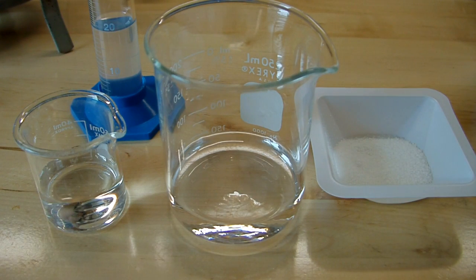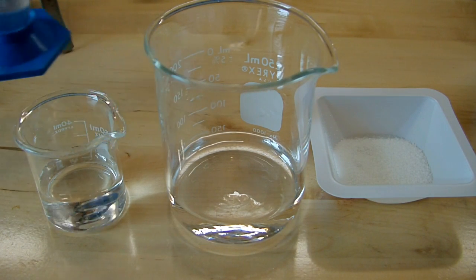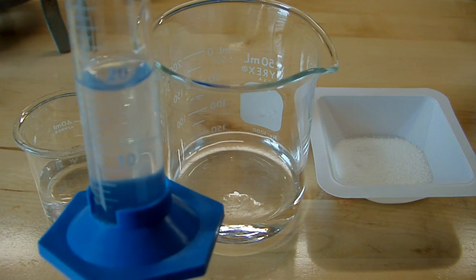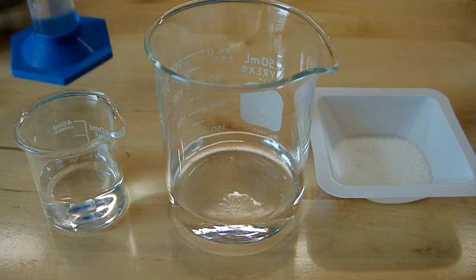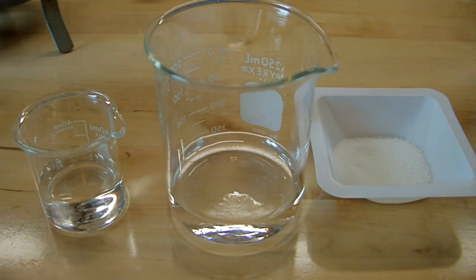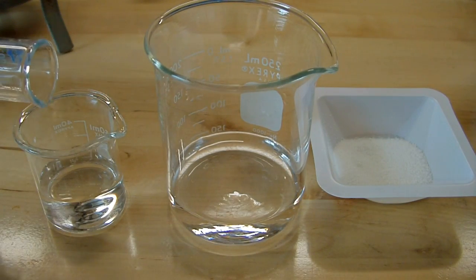To the smaller beaker, I'm going to add 20 milliliters of sodium silicate, which is also known as water glass. That's just going to dilute it down to something that we can use a little easier.